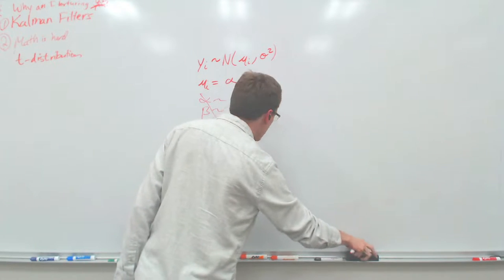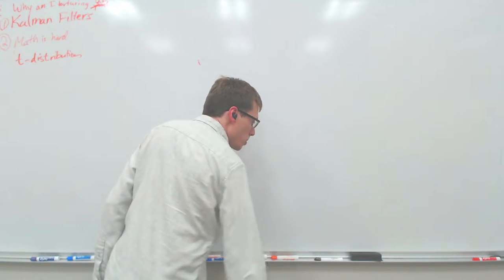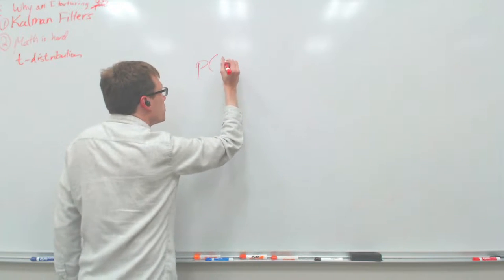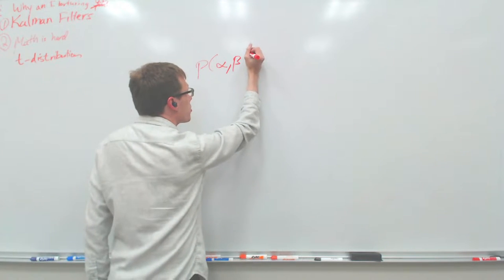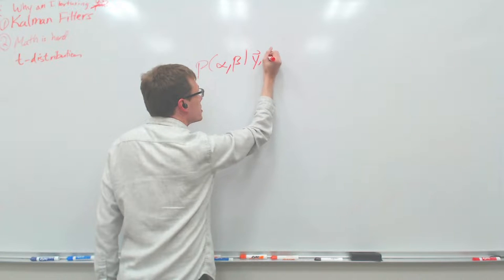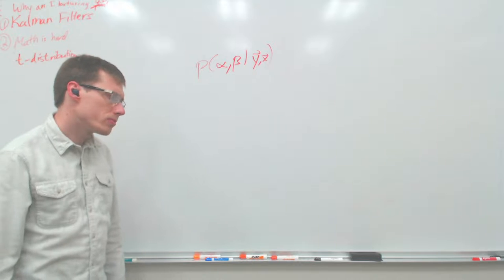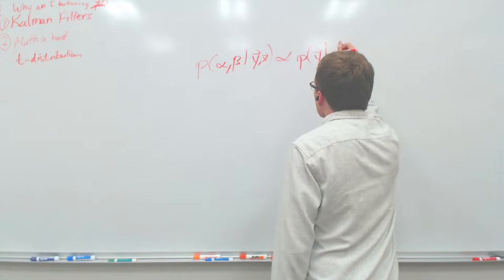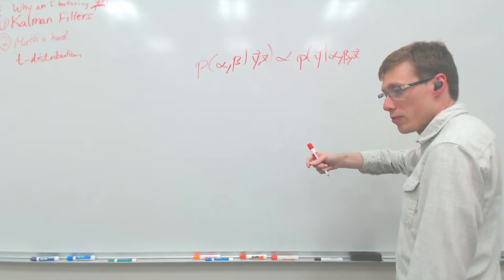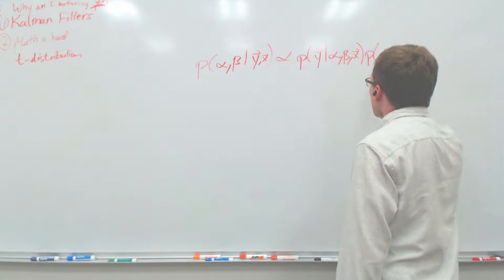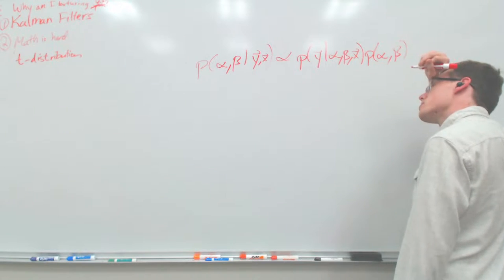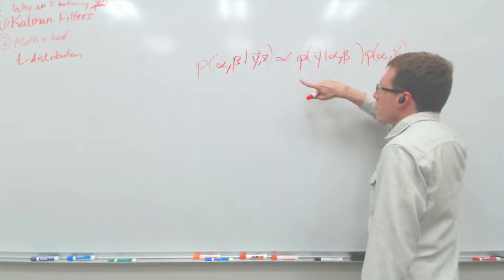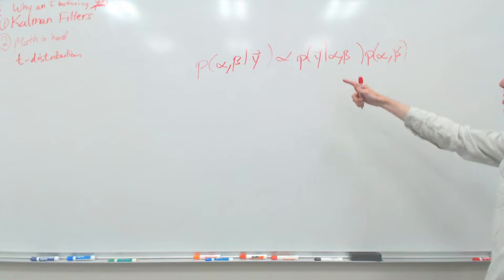So without further ado, let's get started. Luckily with all this Bayesian stuff it's always just the same equation every time. The probability of our alpha and beta — our slope and intercept — conditional on our data, all our y's and x's, is proportional to the probability of the y's given our alphas, betas, and x's, times the probability of our alpha and beta as the prior. The x's are fixed, so we can technically leave them off.